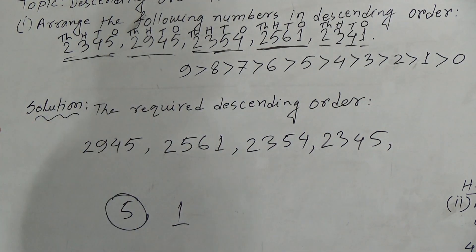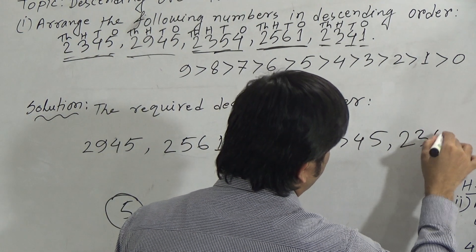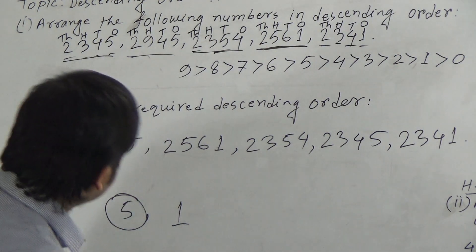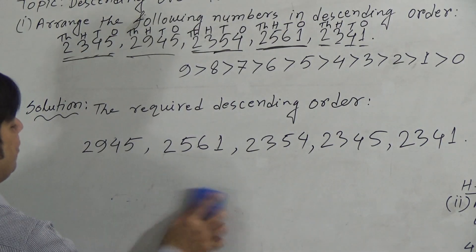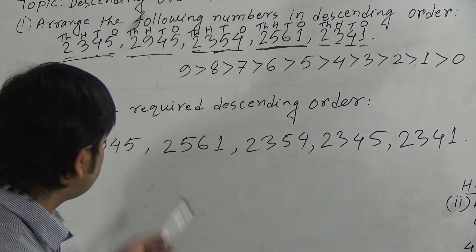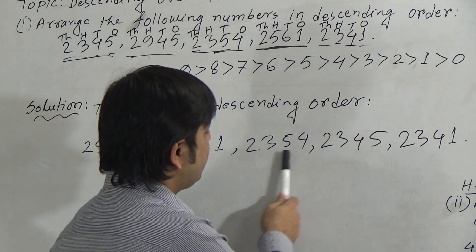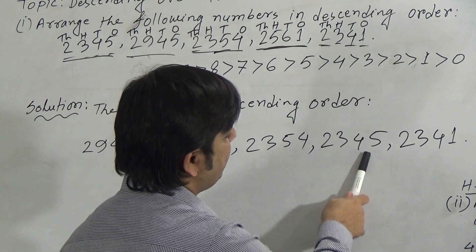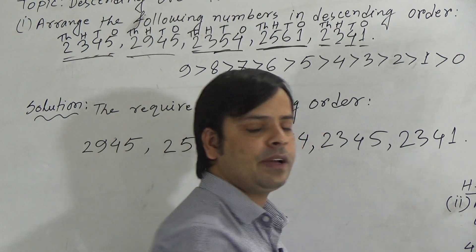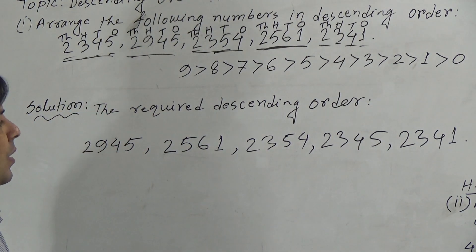So we write 2,345 next, and our last number is 2,341. I have arranged all the given numbers in descending order: first is 2,945, second is 2,561, third is 2,354, fourth is 2,345, and last is 2,341. I hope you have understood how to arrange numbers in descending order.